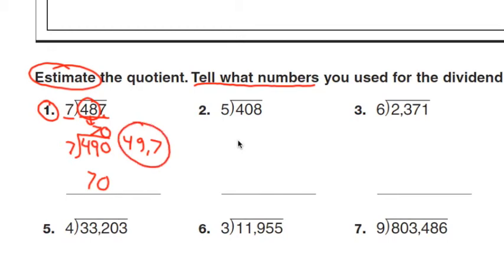Let's skip on over to number 3. Again, I'm going to look at the first two digits and think, what is a multiple of 6 that's close to 23? It's 24.